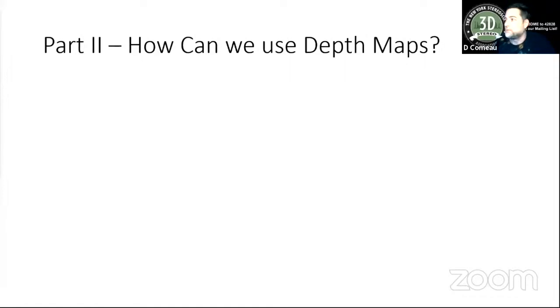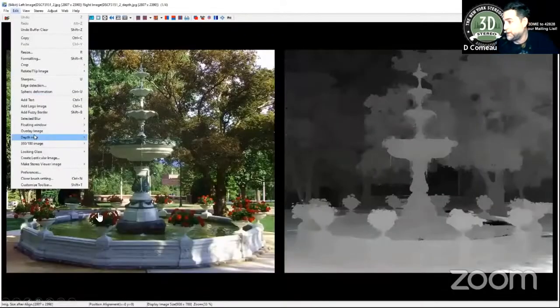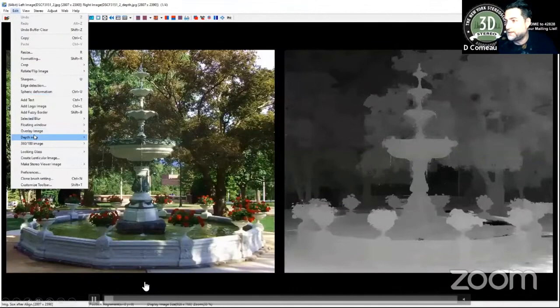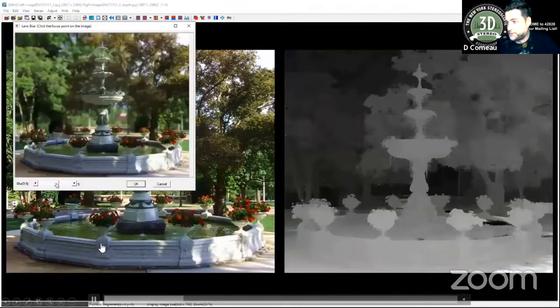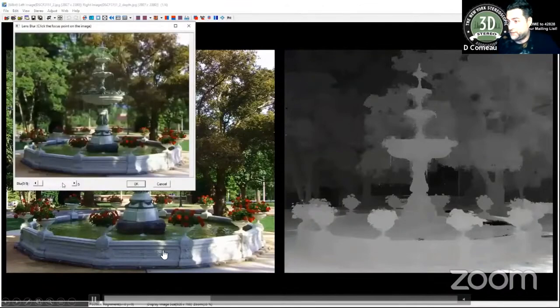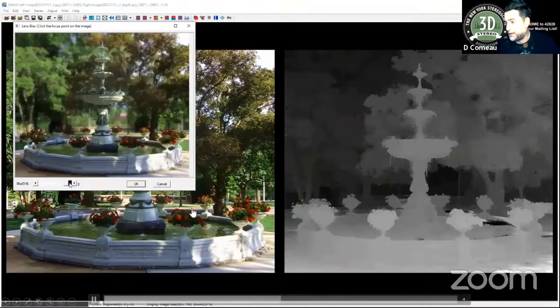So part two, how can we use these depth maps? And we're here for Stereo 3D, right? So you're saying, get to it. Well, not quite yet. Once we have this depth map, we can do a number of interesting things. What we can do is actually blur the background of our 2D image. And we can do that pretty easily in Stereo Photomaker. So we have this option which pops up, and we can click, and if you can see, the background is getting a little bit more blurry. And when I click Apply, then it's just going to change that photo.